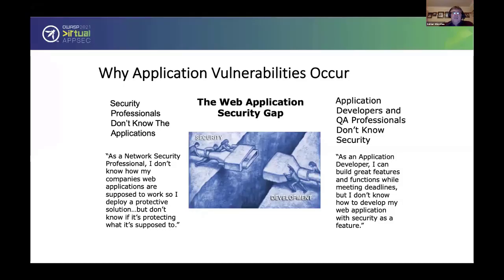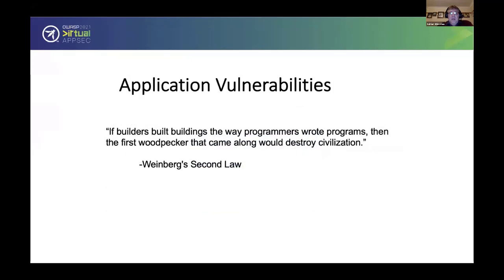So why are those application vulnerabilities still occurring? Typically we still have this gap: security professionals don't know applications, and application QA professionals don't know security. How do we bridge that gap? Taking Weinberg's second law — if builders built buildings the same way programmers wrote programs, the first woodpecker that came along would destroy civilization. Fundamentally, sometimes we're building on very poor foundations.